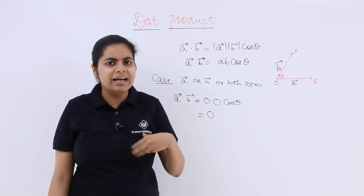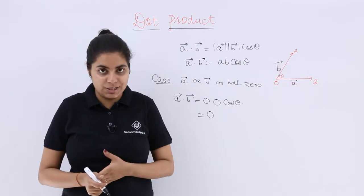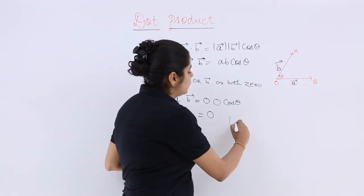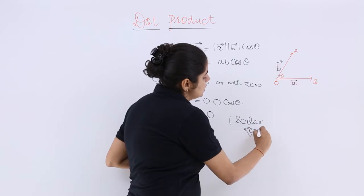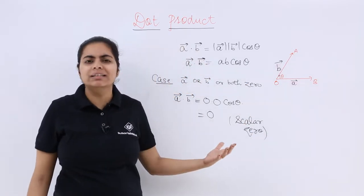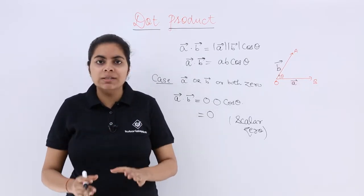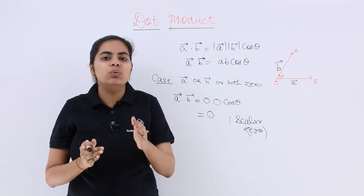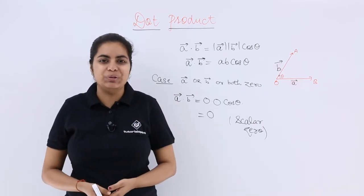So we do not say that directly the dot product is 0. In some books you may find dot product is 0, but in some books you may find the dot product is scalar 0. So you have to consider this as scalar 0. So this is about the dot product considering that you have the vectors, either of them or both of them as 0.